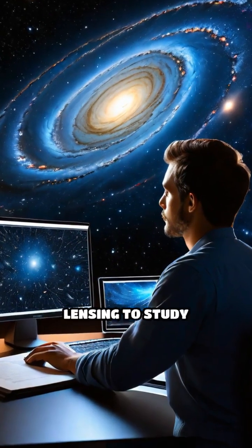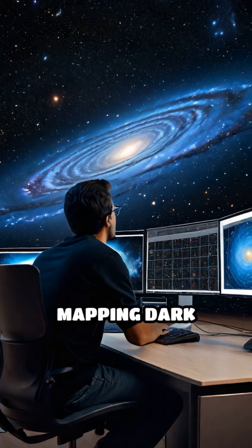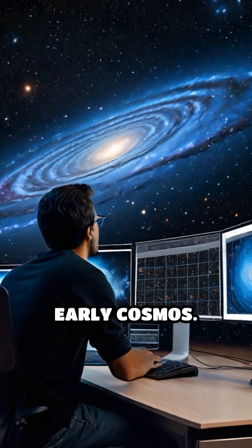Astronomers use gravitational lensing to study the most distant corners of the universe, mapping dark matter and uncovering secrets about the early cosmos.